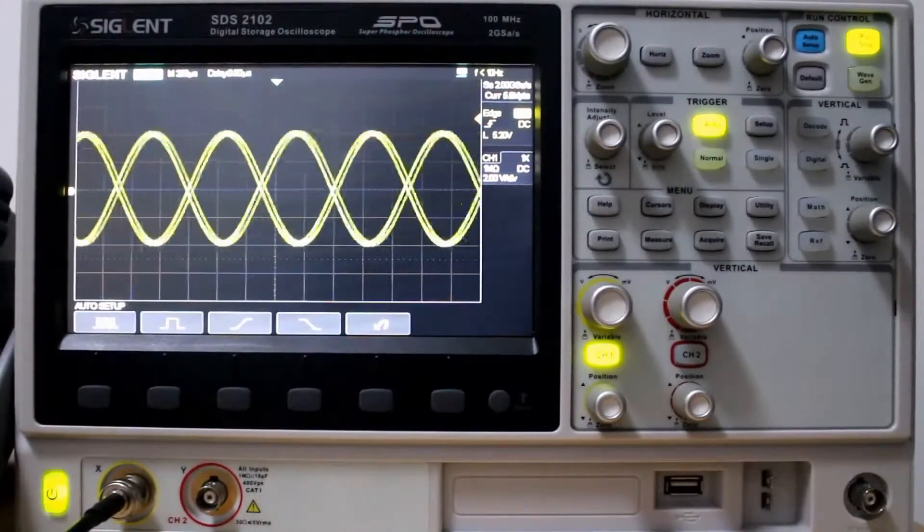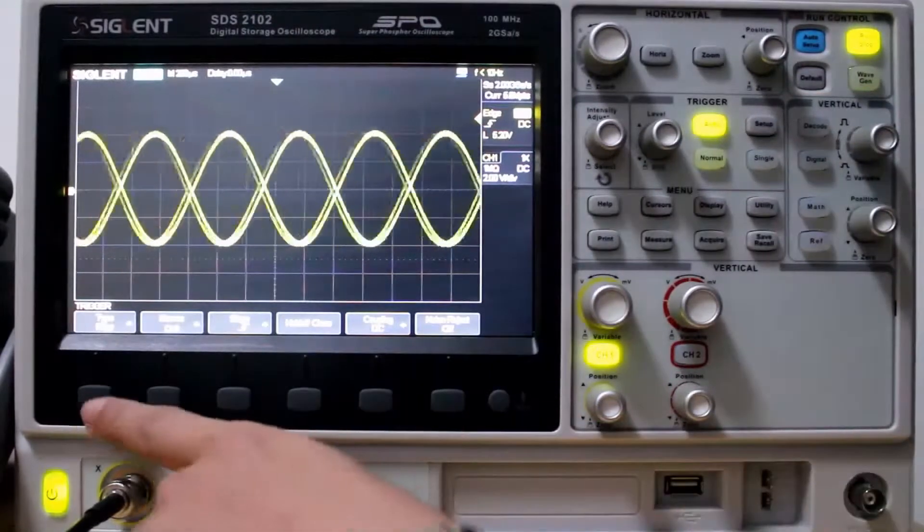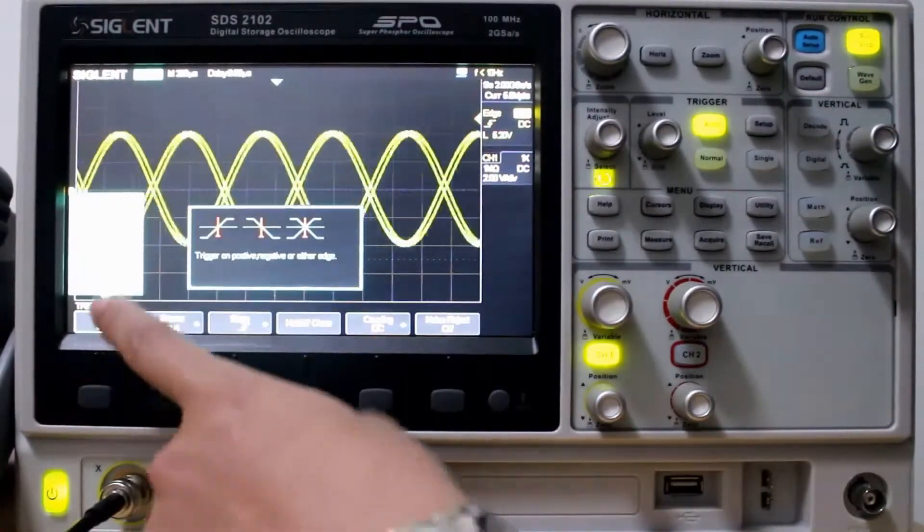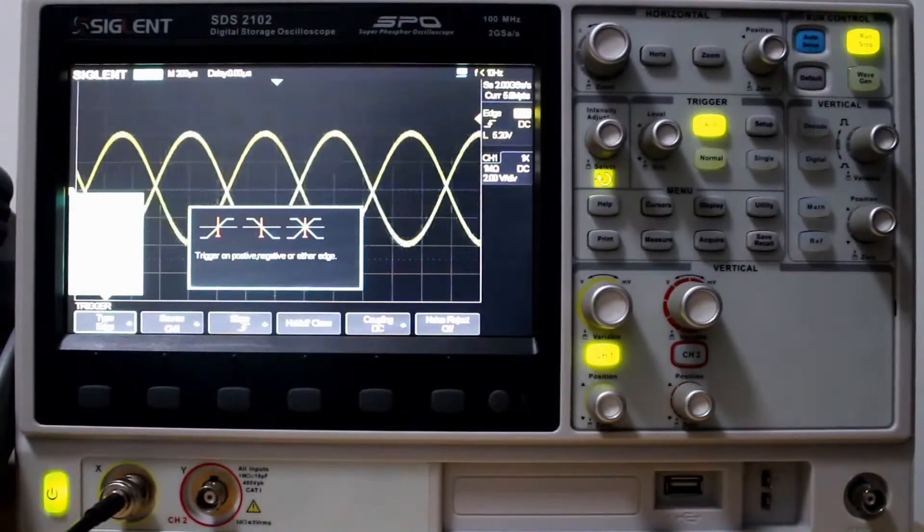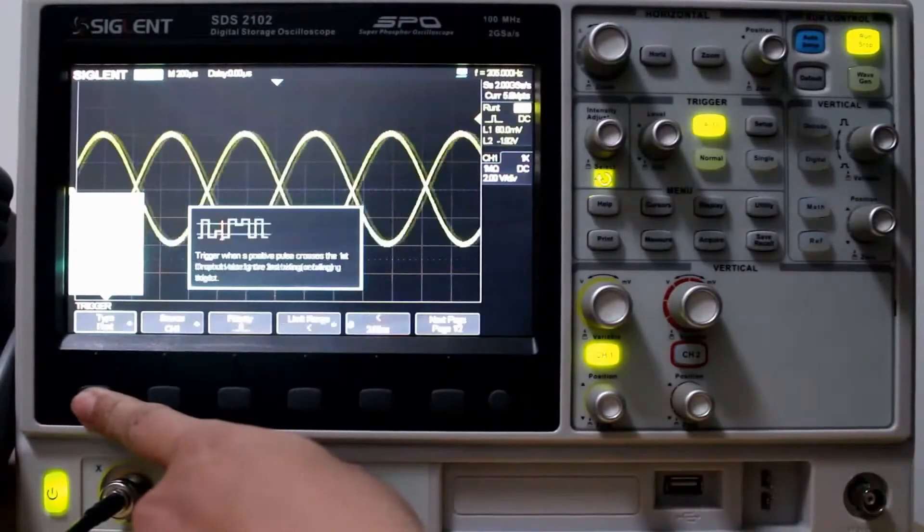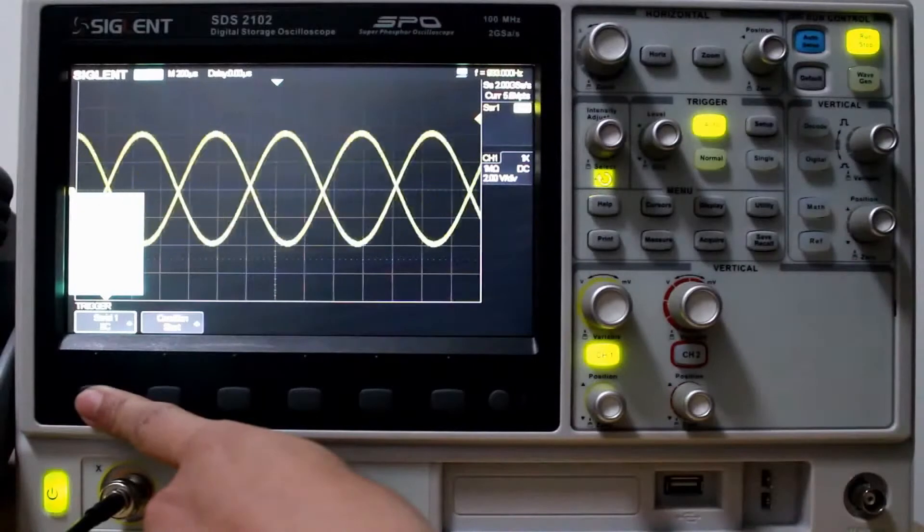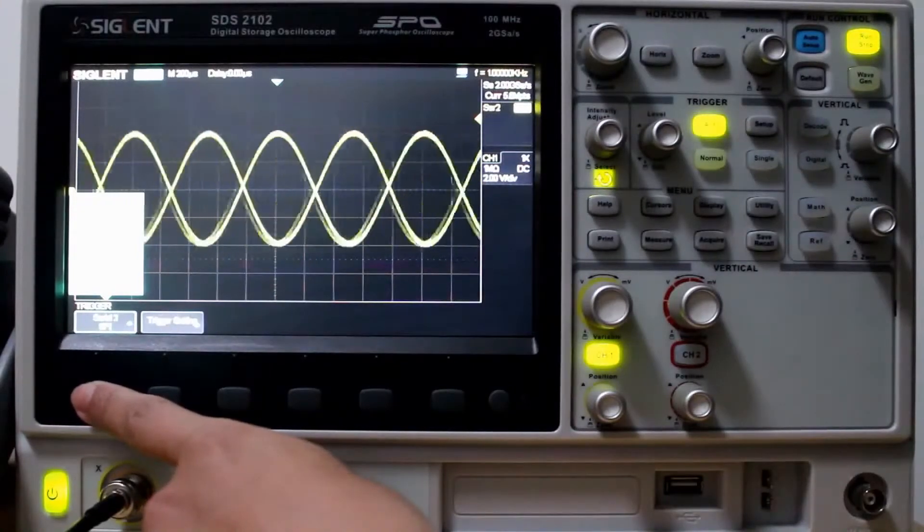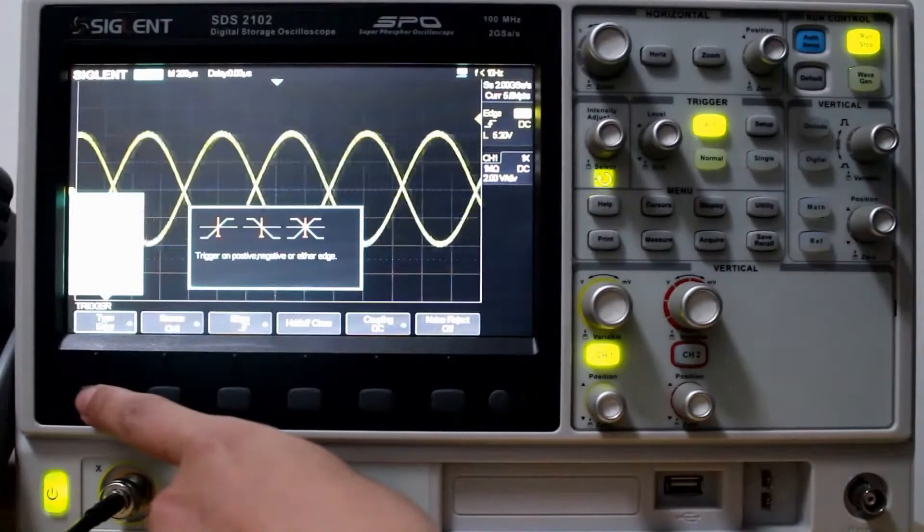Next we're going to look at the different trigger types. So let's check here. We've got Edge, Slope, Pulse, Video, Window, Interval, Dropout, Runt, Pattern. That's nine different trigger types. And then we have Serial 1, that's IIC, and Serial 2, SPI. So nine trigger types and two serial types.